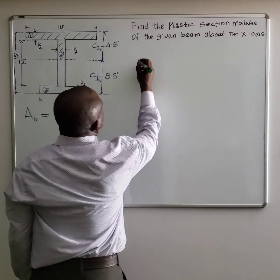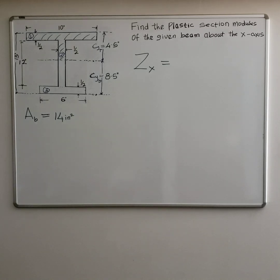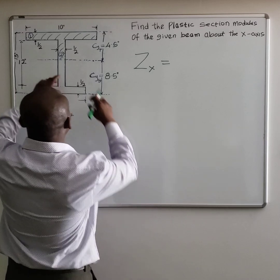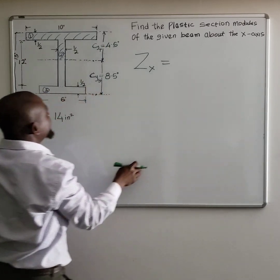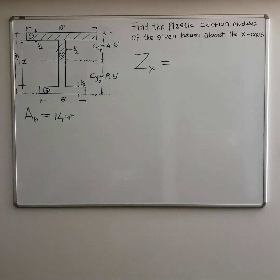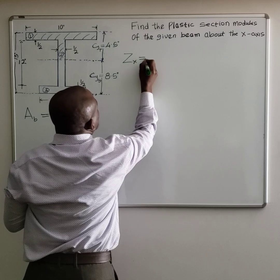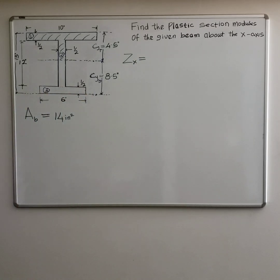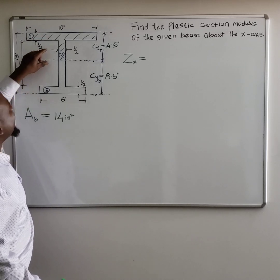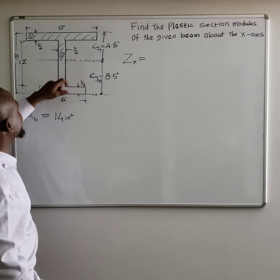Now let's go to our section modulus about the x-axis. Unlike the previous solution — the problem we solved regarding the elastic section modulus, where you just divide the moment of inertia by the centroid distance — this is a little different. The plastic section modulus uses the area of each section and references it to the centroid where the beam is equally divided.